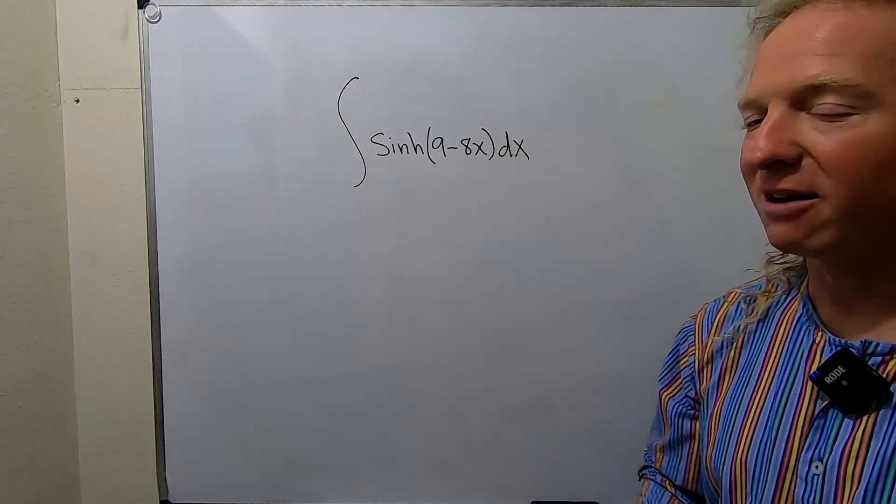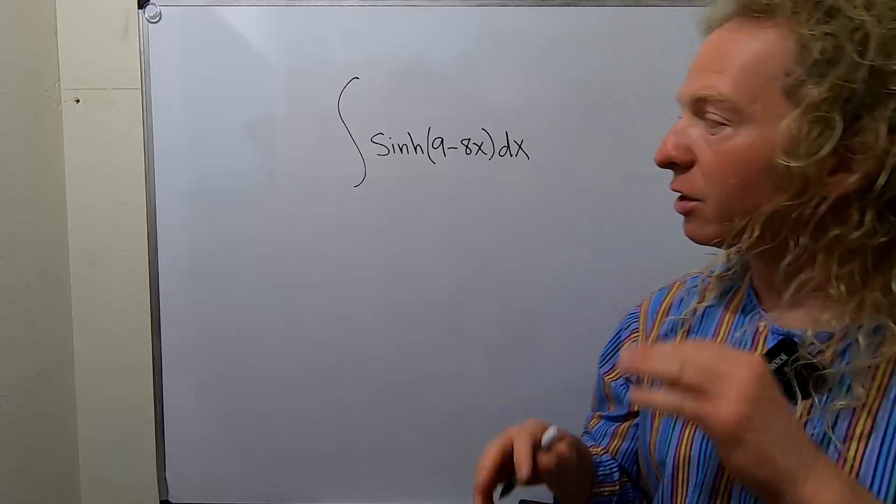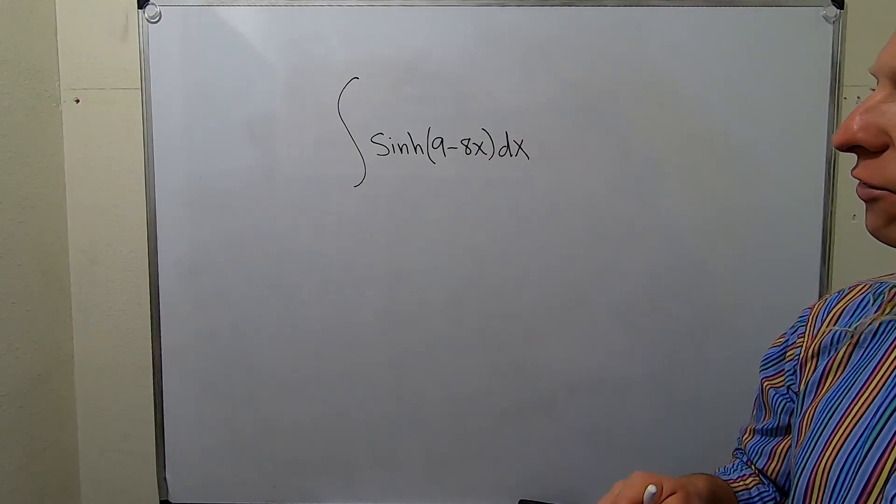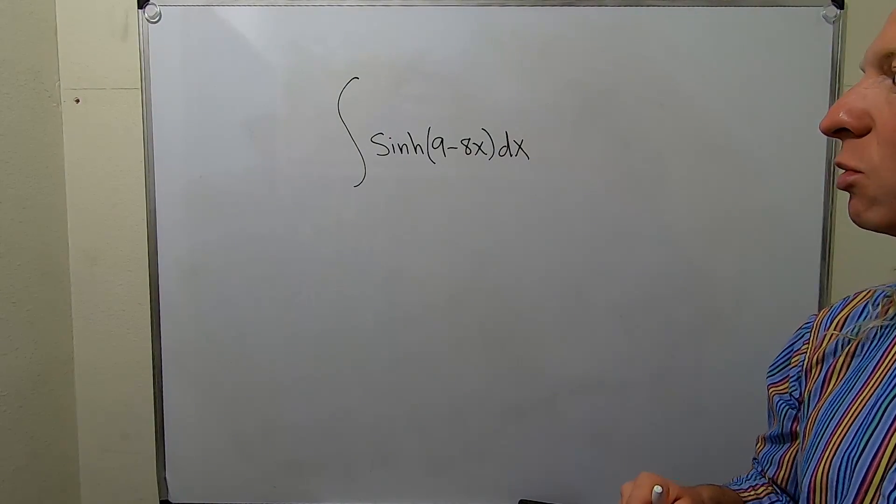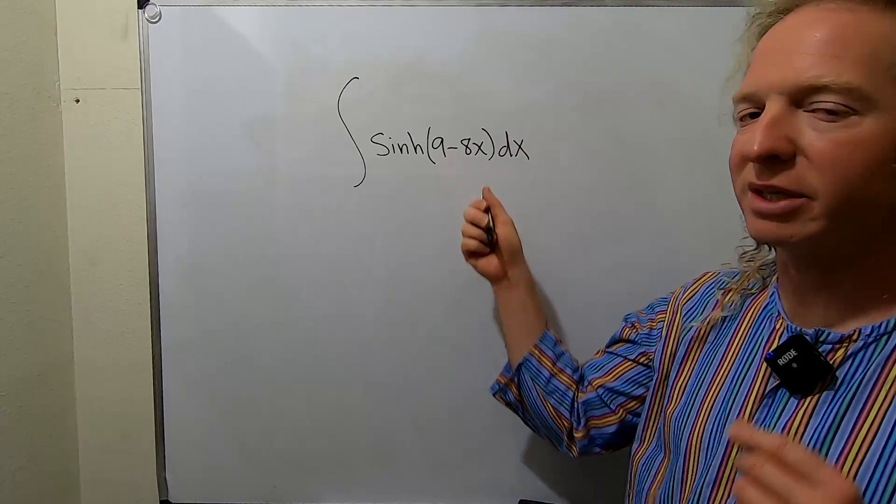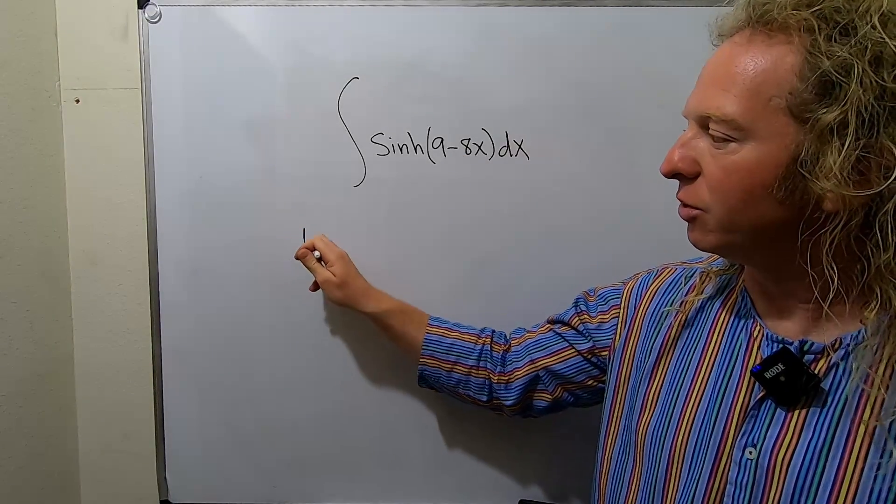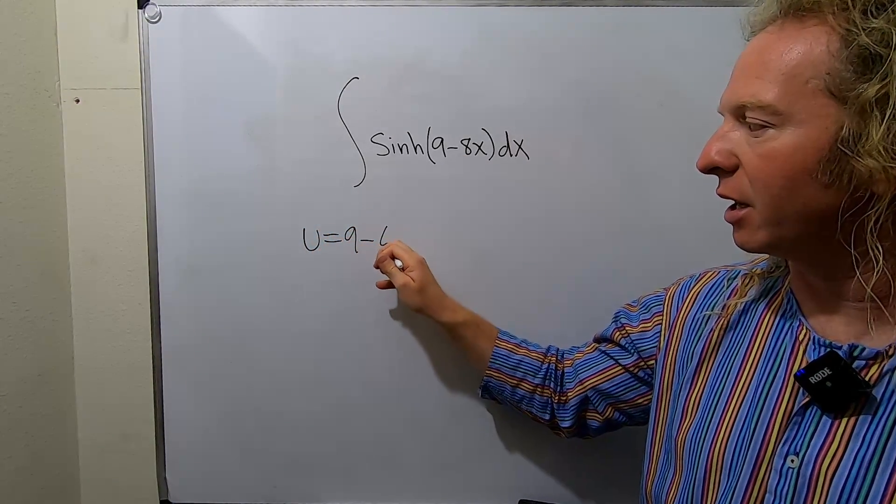Recall that if you have the integral of sinh, you just get cosh. In this case, we have sinh of 9 minus 8x. So what we'll do is let u be the inside piece here. We'll let u equal 9 minus 8x.